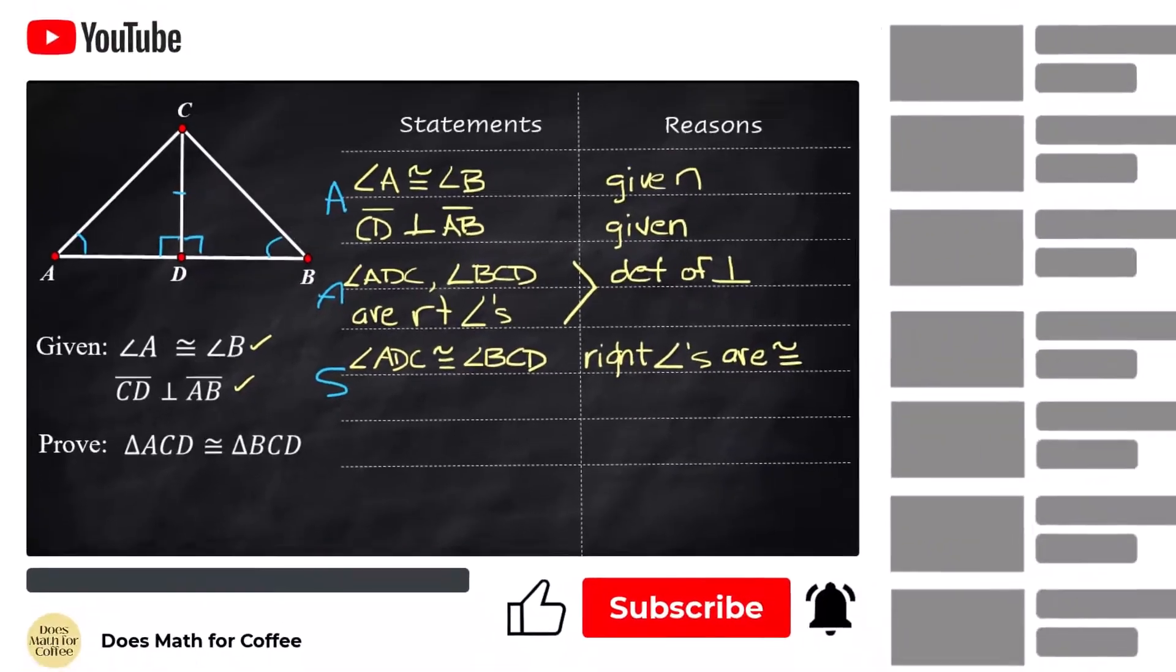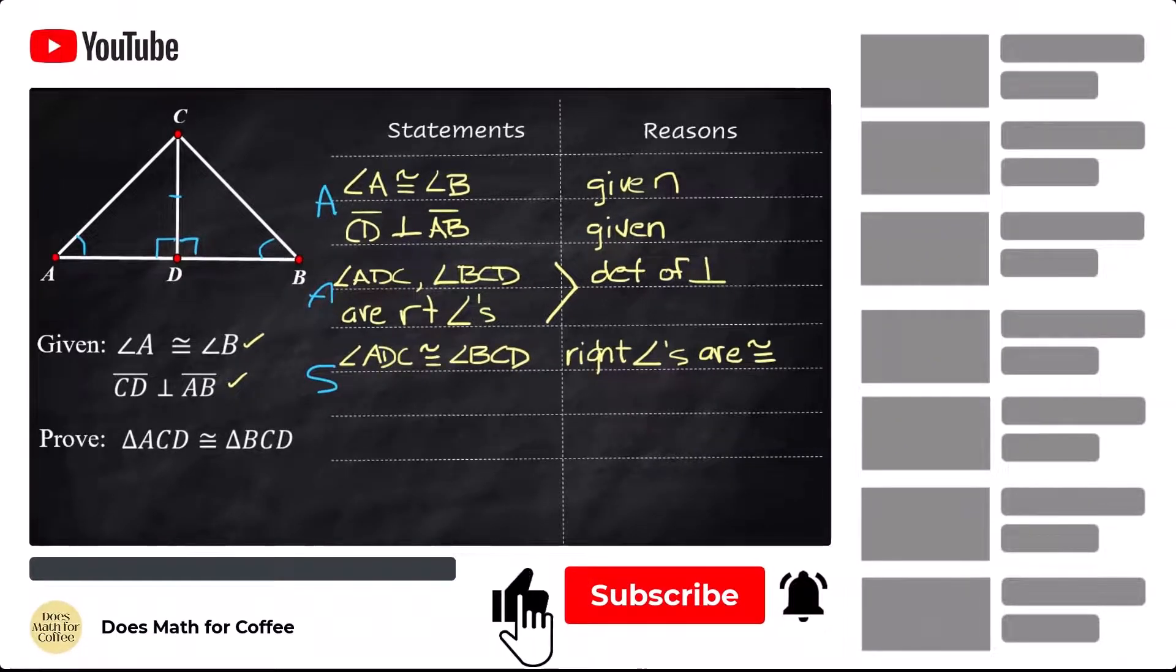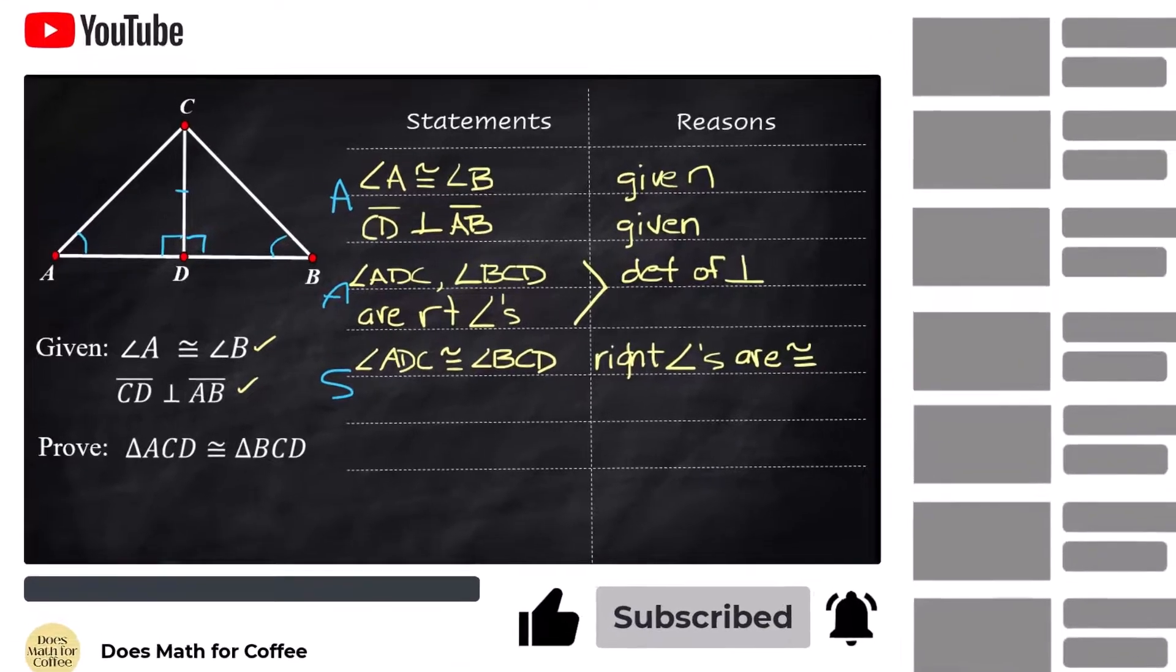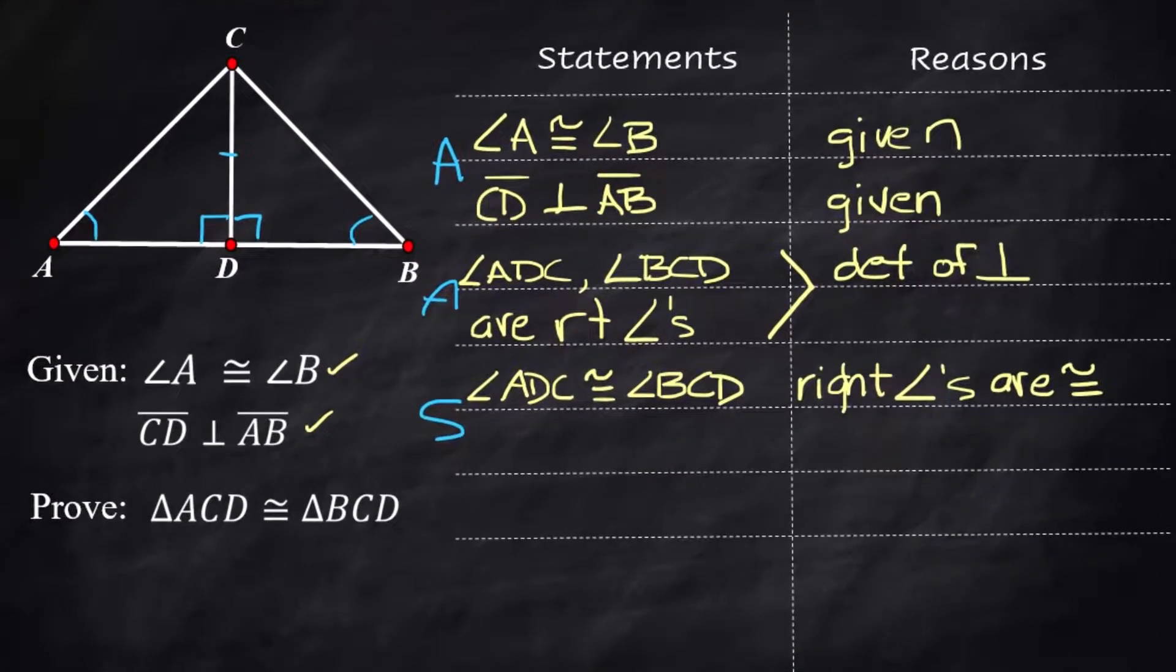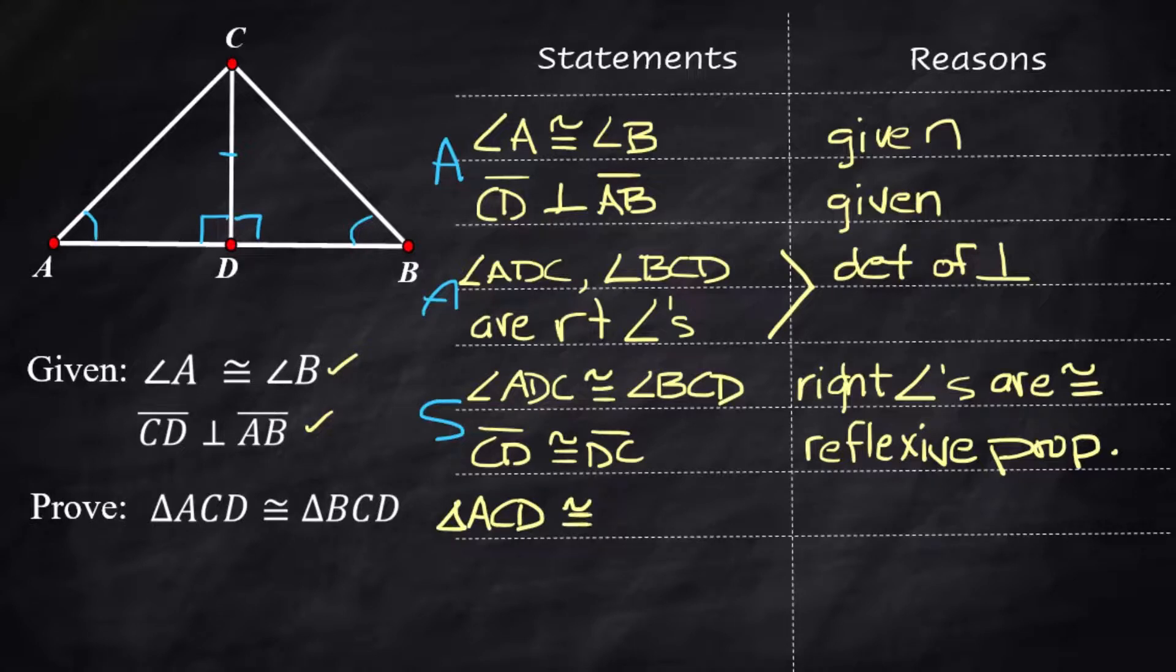And I know that's a big duh, but this is how the proofs work and you have to be very specific and take very tiny steps. And to get that side, segment CD is congruent to segment DC, and the reason is the reflexive property. Therefore, triangle ACD is congruent to triangle BCD.